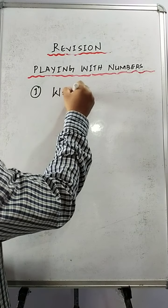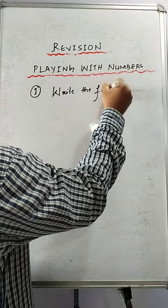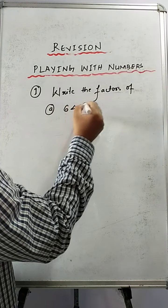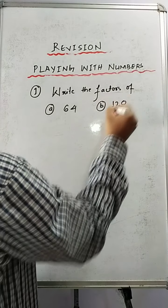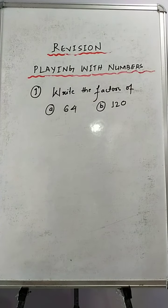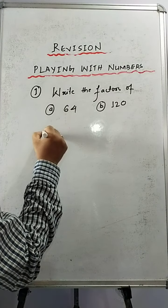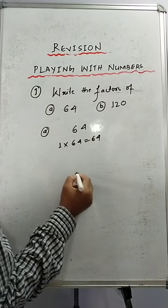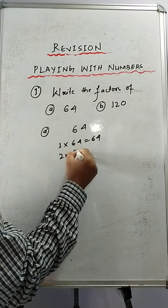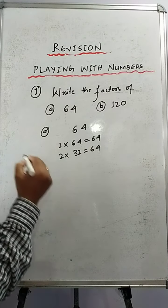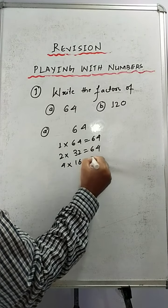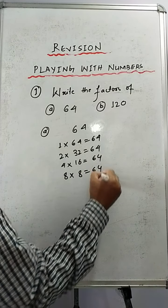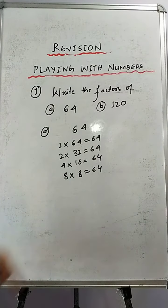Write the factors of number A, which is 64, and number B, which is 120. So we'll get the factors of 64. 64 is 1 into 64. It is divisible by 2, so 2 times 32 is 64. It is not divisible by 3, but it is divisible by 4 — 4 times 16 is 64. It is also divisible by 8 — 8 times 8 is 64. Not divisible by 9. So these are all the required factors.